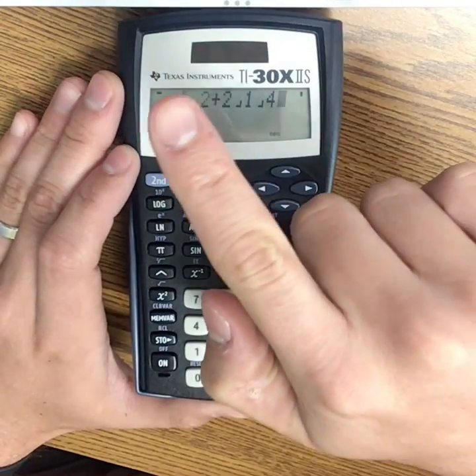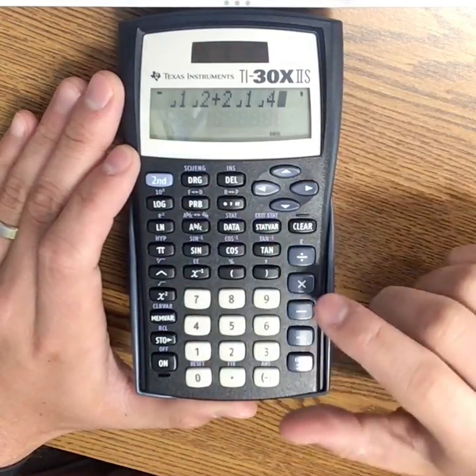Plus, let's say I had two and one-fourth. You'll notice it's typing along the line there, so I can scroll over and see that.